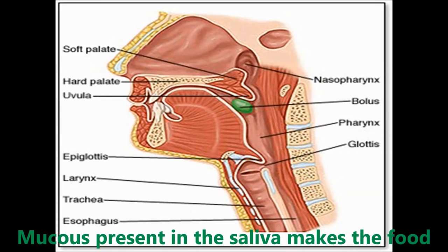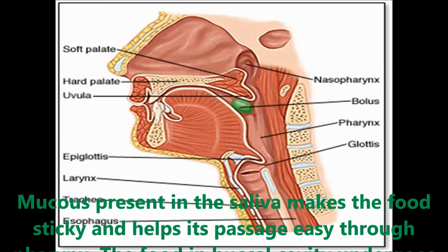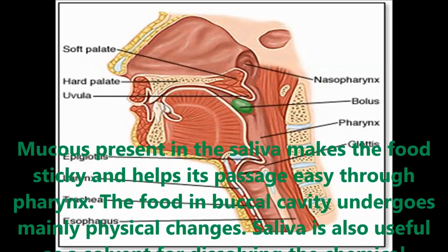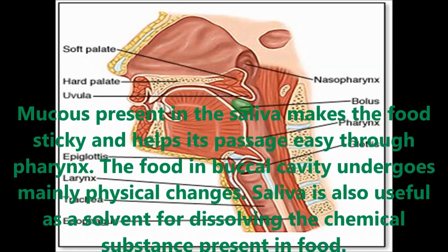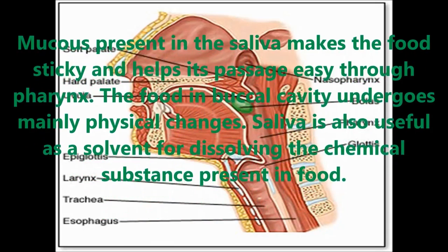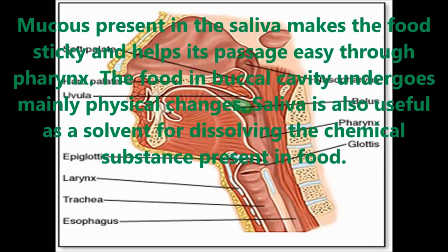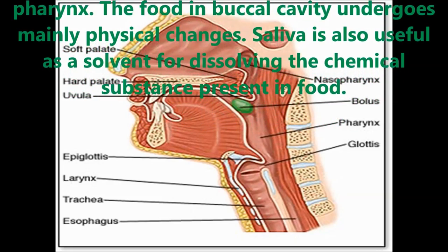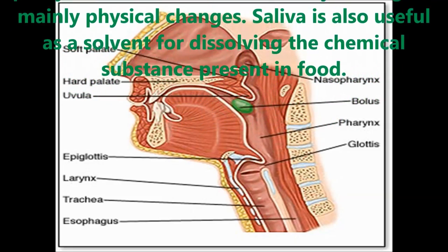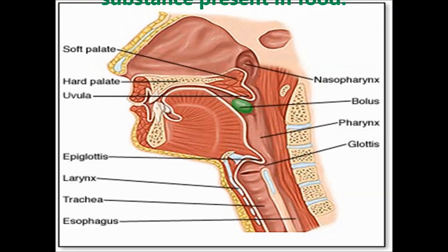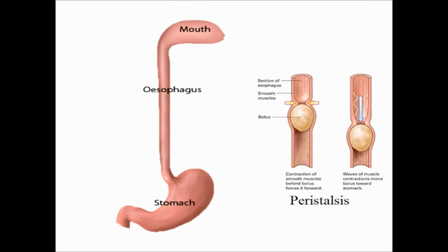The mucus present in the saliva makes the food sticky and helps it pass easily through the pharynx. The food in the buccal cavity undergoes many changes including physical changes. Saliva is also useful as a solvent for dissolving chemical substances present in the food. The food next goes into the esophagus.